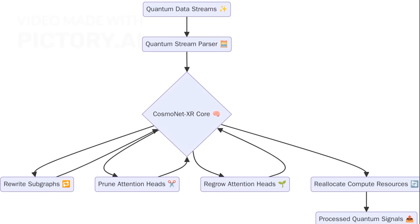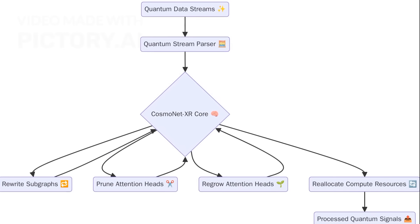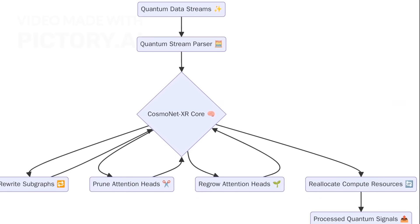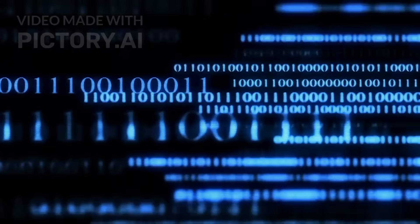Concurrently, DeepMind's CosmoNetXR, a transformer-based neural network capable of rewriting its own subgraphs, pruning and regrowing attention heads, dynamically reallocated computational resources in response to quantum data streams.